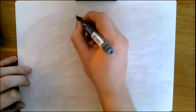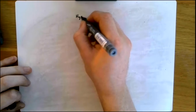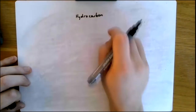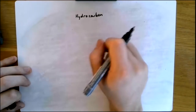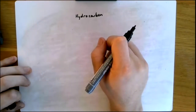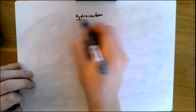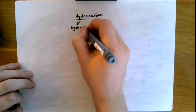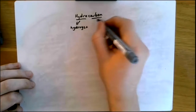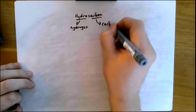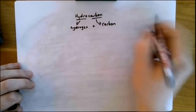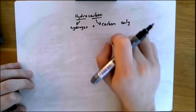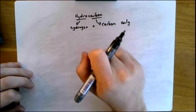In the last video we learned what a hydrocarbon is. So what is a hydrocarbon? I want you to speak your answer out loud now. I'm hoping that you said it's a substance or a compound made of hydrogen and carbon only. Compounds made of hydrogen and carbon only — we call them hydrocarbons.